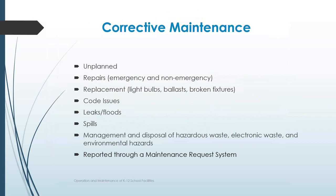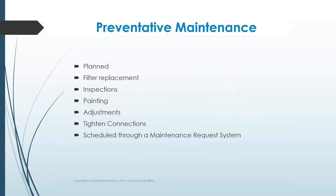Typically there will be a maintenance request system where you report corrective maintenance needs. It's really important in managing a facility that there's a systematic way to report corrective maintenance needs so you can enter those through a maintenance request system. The other kind of maintenance needs are preventive maintenance needs — these are planned. Sometimes the administrator or educator is not involved because this is actually coming in and doing service on a regular basis on equipment. Sometimes preventive maintenance is neglected; some schools operate on a fix-on-failure approach — don't fix something unless it breaks — but that can be a very expensive way to operate a building.